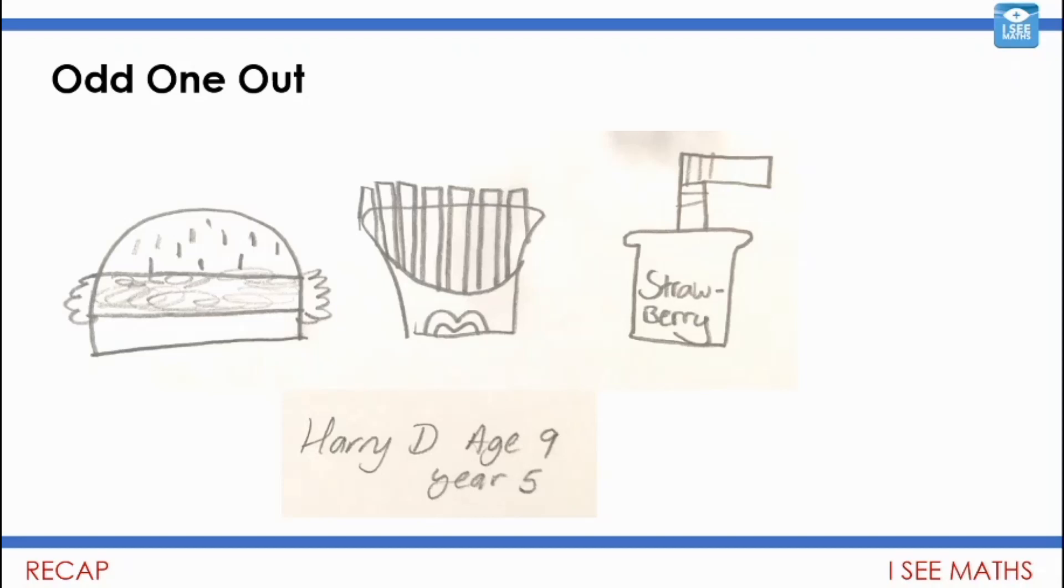So the strawberry milkshake, there's like one strawberry milkshake, there's one burger but there's lots of chips. So that's what I thought. I wonder if that's what Harry was thinking. And then I thought no the strawberry milkshake is the odd one out because it's a drink. I wonder what you came up with. Just some brilliant examples and we'll have a look at some more again tomorrow.